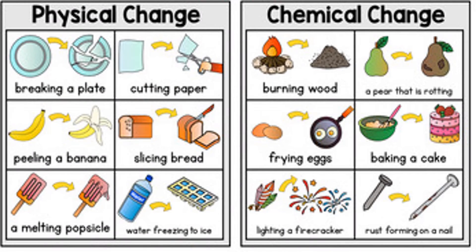Here you can see more examples of physical and chemical changes from daily life. Physical changes include breaking a plate, cutting paper, peeling a banana, slicing bread, melting a popsicle, and water freezing to ice. Examples of chemical changes include burning of wood, rotting fruit, frying eggs, baking a cake, lighting a firecracker, and rust forming on a nail.